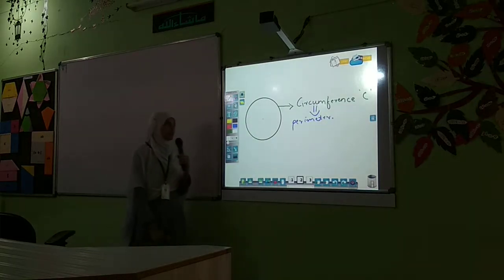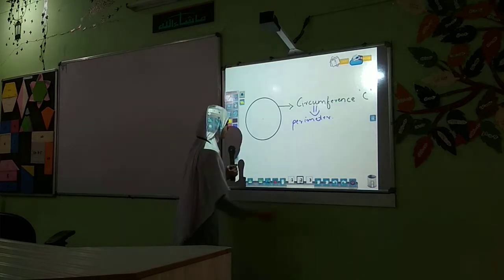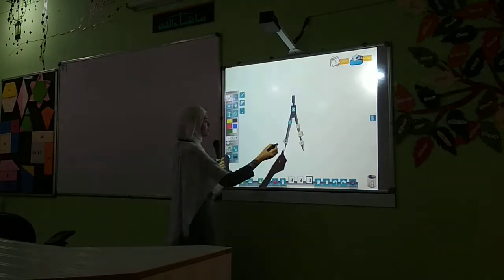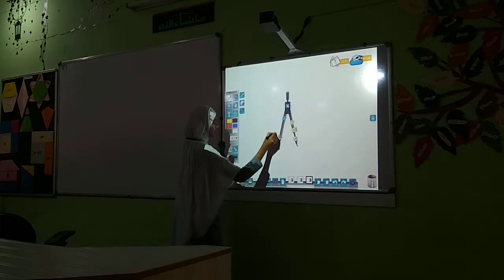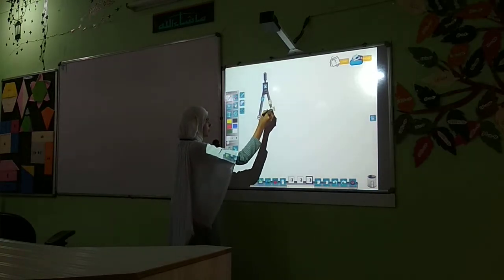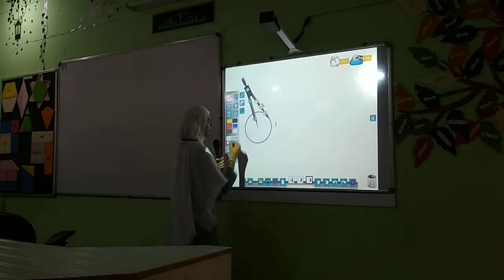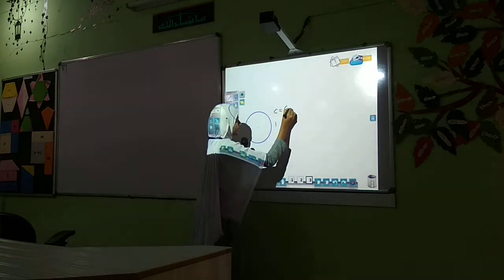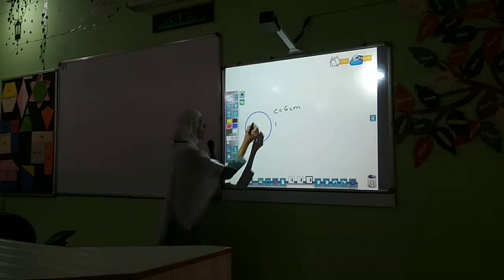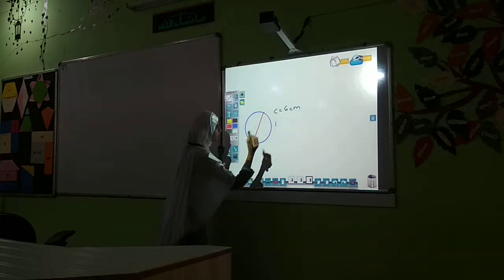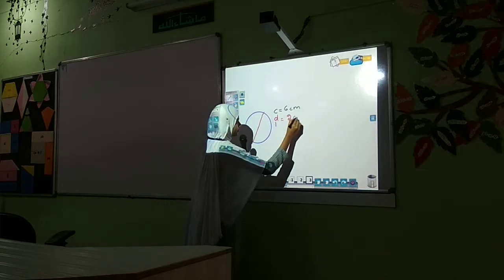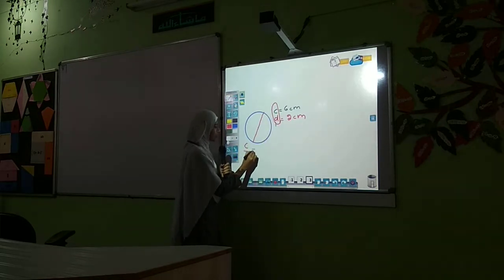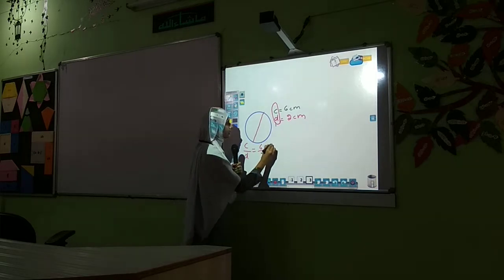How do we find this circumference? Let us derive the formula. Let us consider a circle with circumference 6 cm and diameter nearly 2 cm. We have to take the ratio between those two. Here, C divided by d is equal to 6 divided by 2, which is 3.